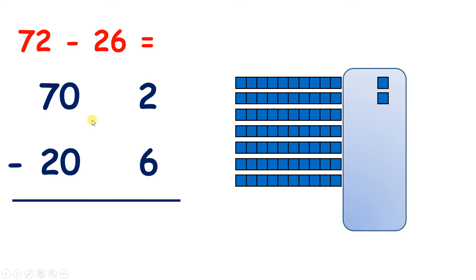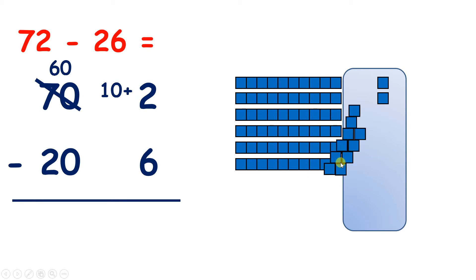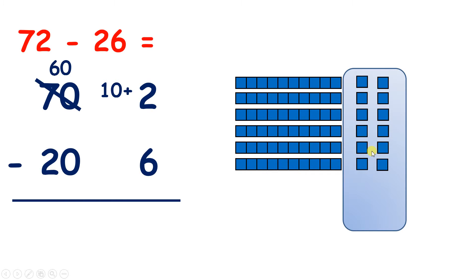So what can I do? I need to regroup one of my tens into 10 units. Sometimes this is called borrowing a 10. We have 7 tens, or 70. But if I cross out 70 and write 10 less than 70, which is 60, I can then add 10 to my units. So we're taking this 10 and turning it into 10 units. Now I only have 6 tens but I have 12 units — 10 plus 2 is 12. So we can't do 2 minus 6, but we can do 12 minus 6.